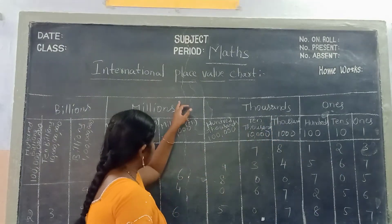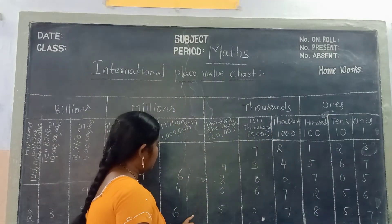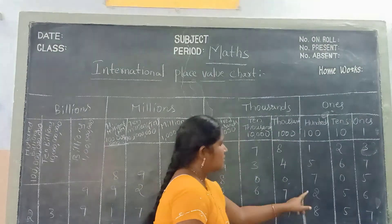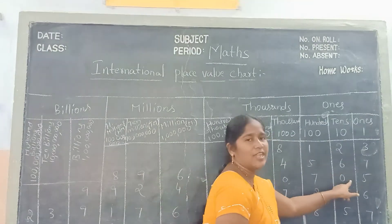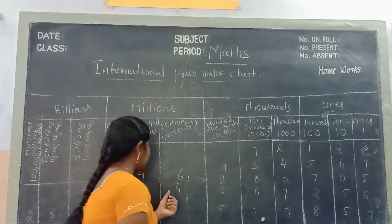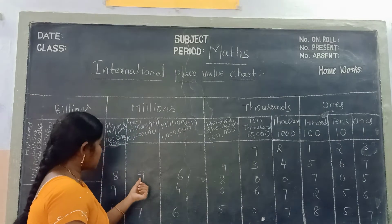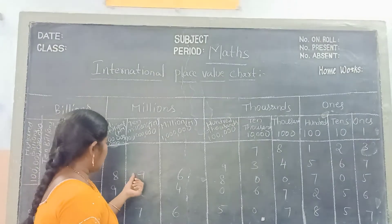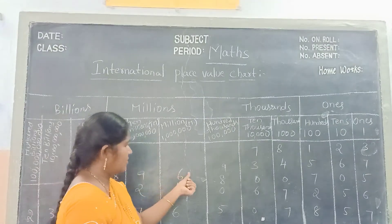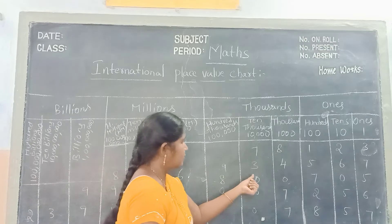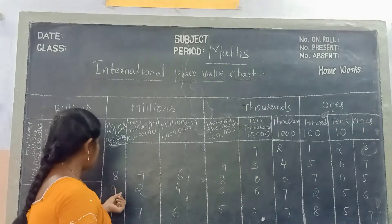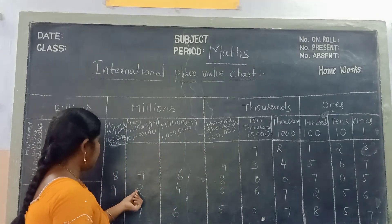Once again, see children: six million, eight hundred thousand, seven hundred and five. Next number, see children: 8, 9, 6, 8, 0, 0, 7, 0, 5.